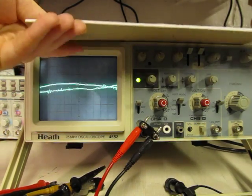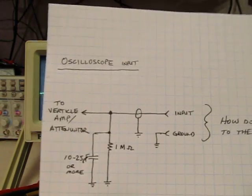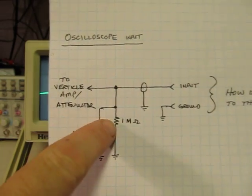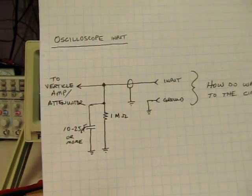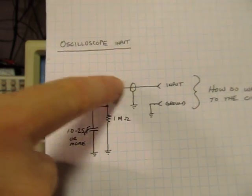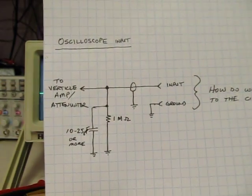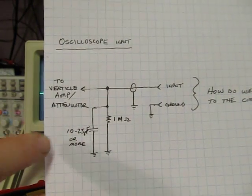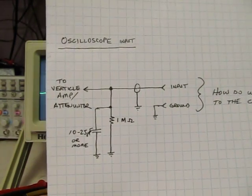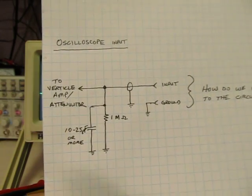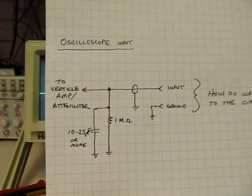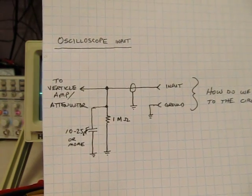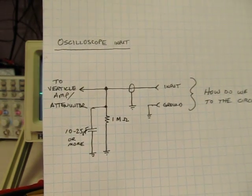It helps to start off by looking at what the scope input looks like. It's basically almost most of the scopes will have a one megaohm input impedance. So basically right behind the front panel connector, it looks like a one megaohm resistor to ground. And that's typically got, in parallel with it, anywhere from 10 to 25 or 30 picofarads of capacitance. So it's a pretty high impedance, just like your voltmeter is. But it also has a lot more bandwidth than your voltmeter, so it's going to pick up all kinds of things.